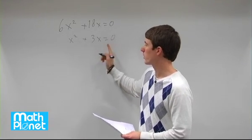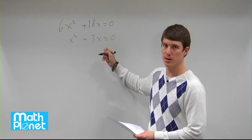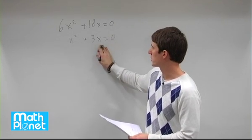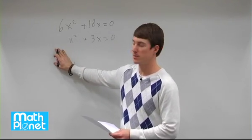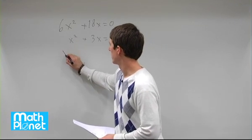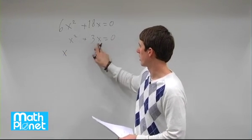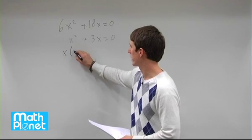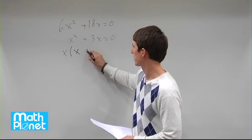Now, since we don't have a numbers term here, we don't have that c term, we can just factorize out an x. So it's a straightforward factorization. The only common factor here is x. So that gives us a remainder of x plus 3.